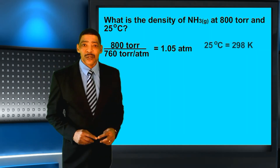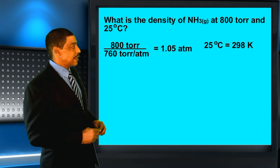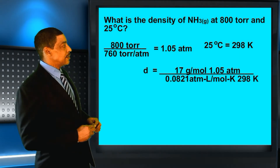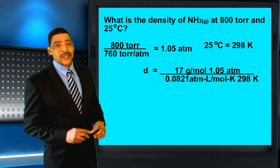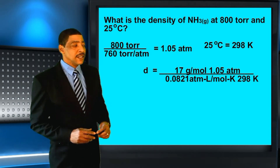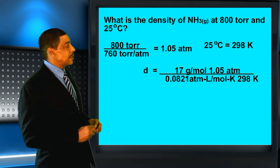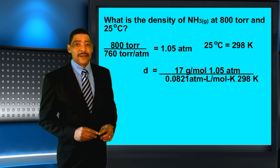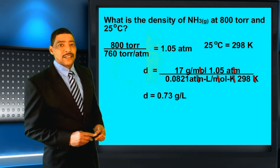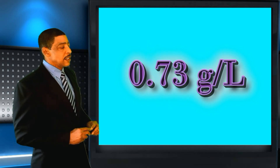To convert the Celsius temperature to Kelvin, add 273: 25 degrees Celsius plus 273 gives 298K. Inserting the information into the density calculation: 17 grams per mole (the molar mass of ammonia) times 1.05 atm, divided by 0.0821 atm times liters divided by moles times k, times 298K. The moles, atmospheres, and k cancel, and the density of ammonia under these conditions will be 0.73 grams per liter.